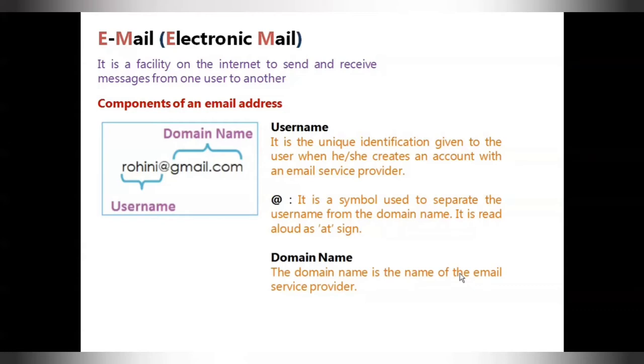In order to send and receive emails, you need to register with the email service provider that provides you with a username and a secret code or password for logging into your account. There are many websites that allow you to create your email account for free of cost. Gmail, Yahoo, and Hotmail are some of the most popular email service providers. When you create an email account, you are provided with a unique email address using which people can send you mails. An email address is made up of two parts: the first part is the username that you choose, and the second part is the domain name of the email service provider. The at-the-rate symbol is used to separate the username from the domain name.